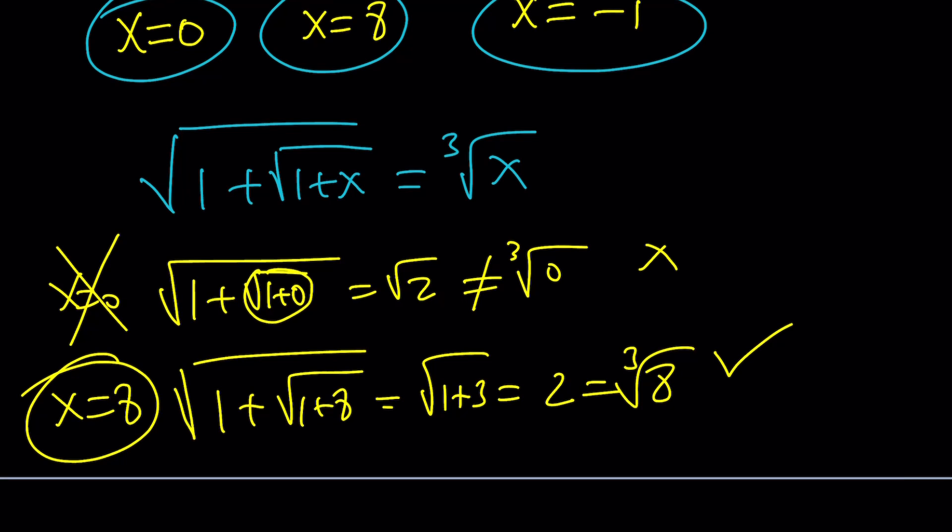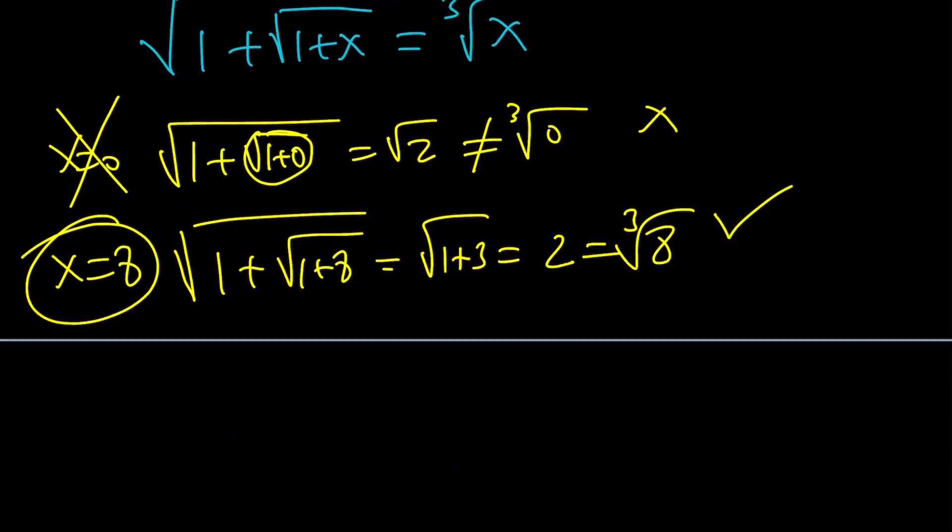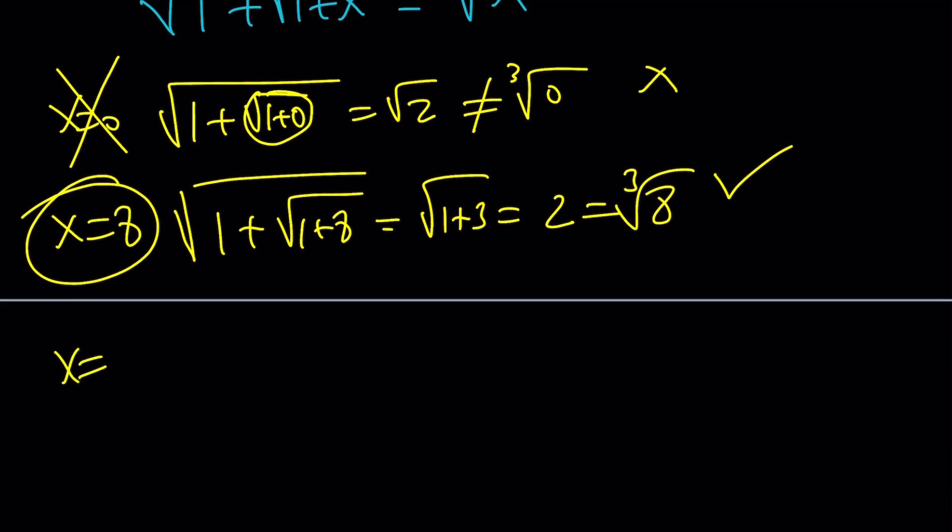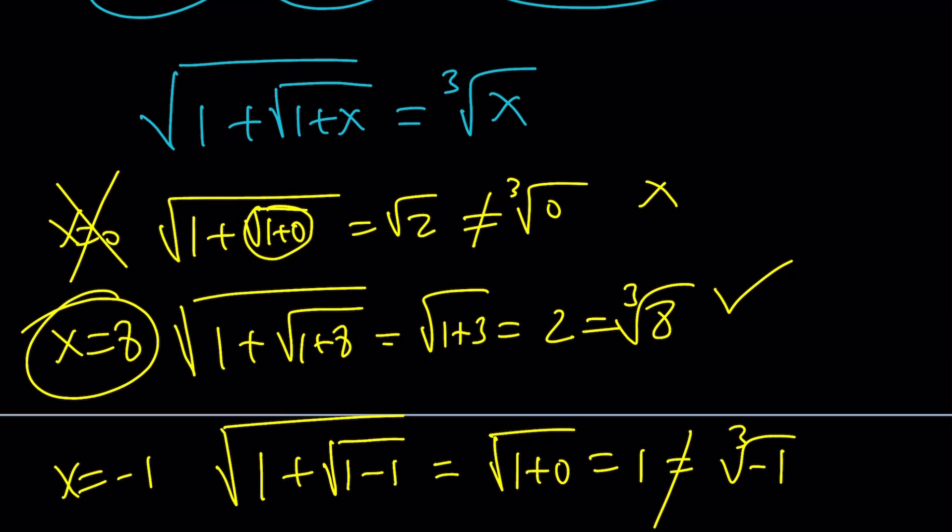The final value we're going to check is x equals negative 1. If you replace x with negative 1, you get the square root of 1 plus the square root of 1 minus 1, which is the square root of 1 plus 0, which is 1. But unfortunately, that's not equal to the cube root of negative 1, because cube root of negative 1 is negative 1. Therefore, x equals negative 1 didn't work, and we are left with a single solution: x equals 8.